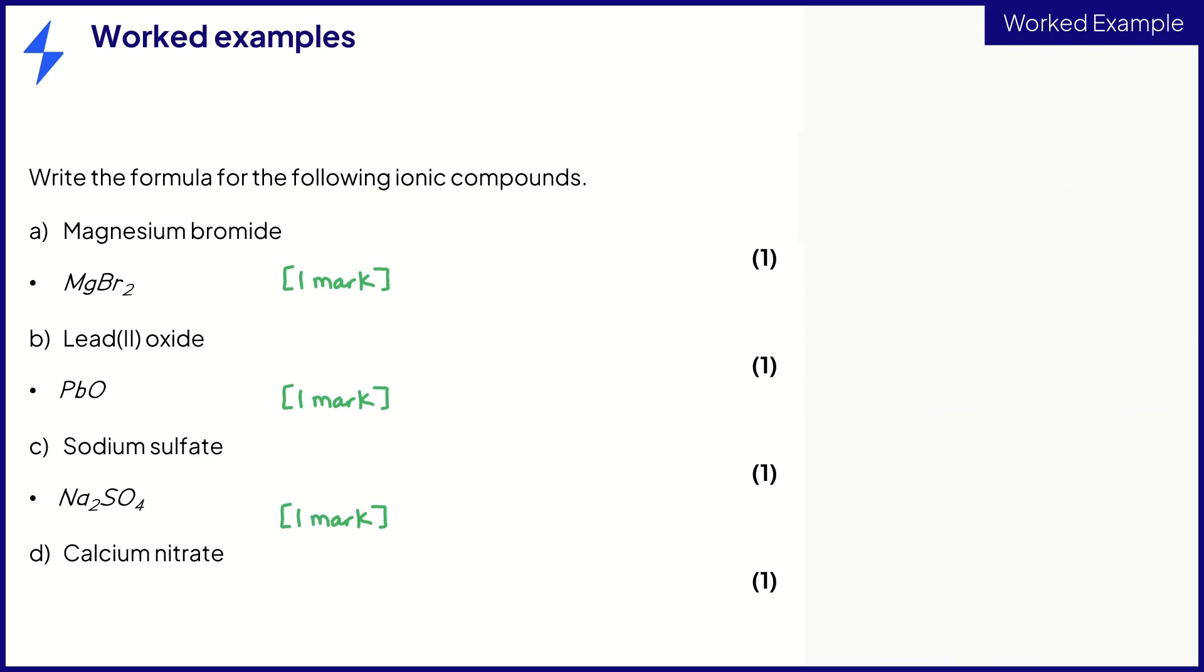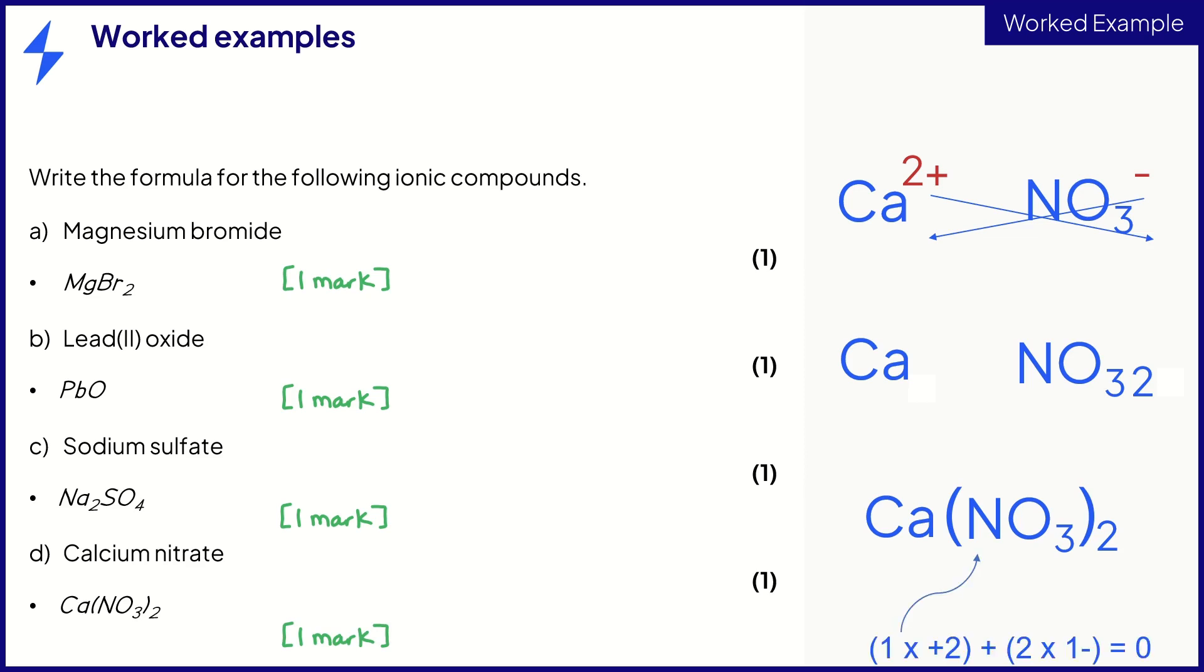You may remember that earlier in the video we mentioned the use of brackets. In this example of calcium nitrate they are required and we will look at why. Start by writing down the ions for the calcium and nitrate as normal and again swap and drop. Now remove the charges and we are left with CaNO32. Now this looks like there are 32 oxygen atoms in the formula which is just not the case. We can show that there are two nitrate ions by adding brackets here. This again scores one mark. And finally you can check your answer by adding up the charges of each of the ions in the formula and making sure they equal zero.